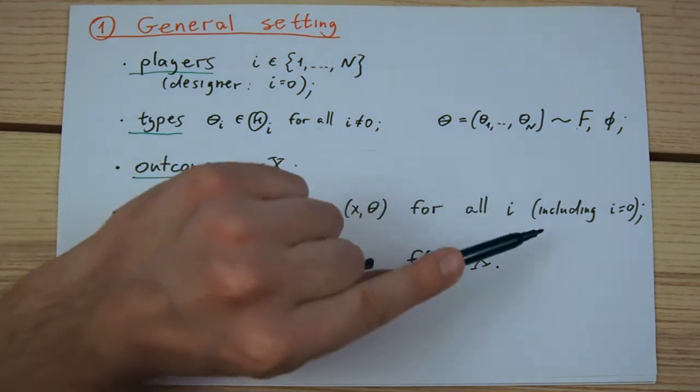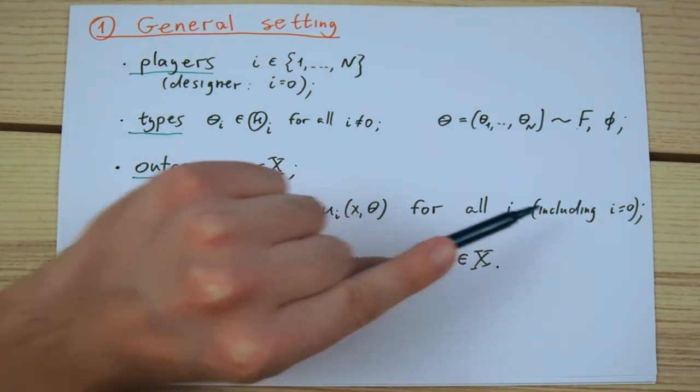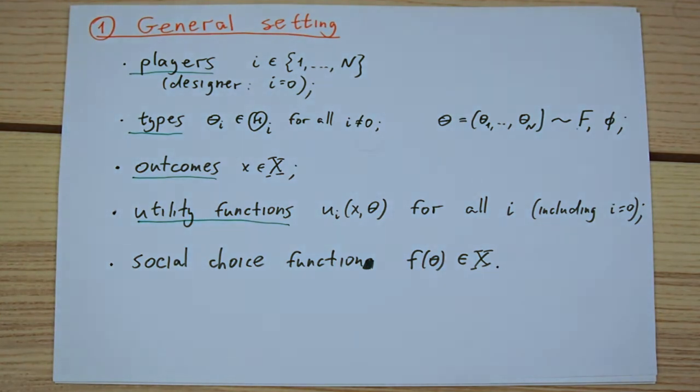Furthermore, we allow the principle to have preferences over outcomes. This is useful for capturing social costs and benefits of different decisions when they are not explicitly internalized by any single player.